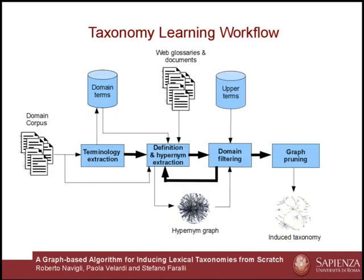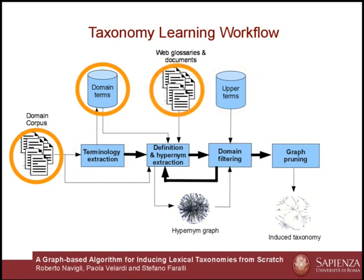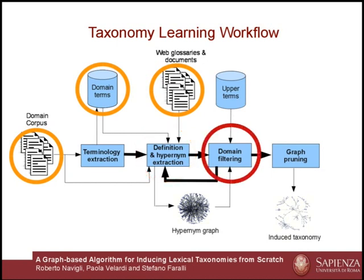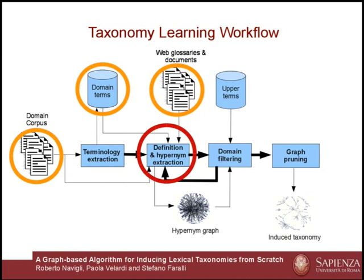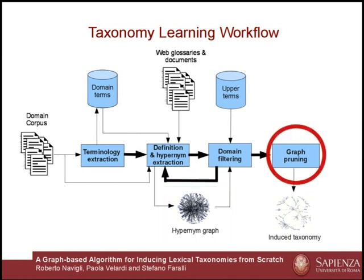This is our taxonomy learning workflow. First, we define the set of upper terms, denoting high-level abstract concepts. Then we acquire a domain terminology from a corpus of documents using a terminology extraction tool. For each acquired term, we mine the same corpus and the web in search of definitional expressions, using an algorithm based on generalized word lattices, which we have called word class lattices. Non-domain definitions are eliminated based on the number of domain-relevant words in the definition. The retrieved hyponyms are then used for a new web search, and the process iterates until a termination condition occurs. The result is a highly dense hyponym graph with several cycles and possibly disconnected components. We then apply an algorithm to find an optimal branching.